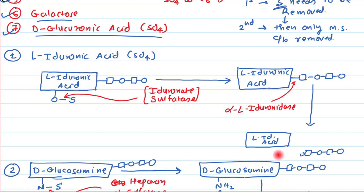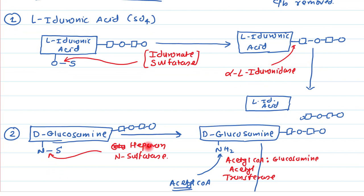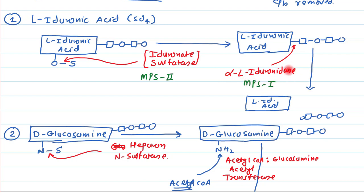All the enzymes discussed can be congenitally deficient, causing different diseases. Deficiency of iduronate sulfatase causes mucopolysaccharidosis type 2 (Hunter disease). Deficiency of alpha-L-iduronidase causes mucopolysaccharidosis type 1 (Hurler disease).